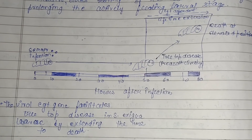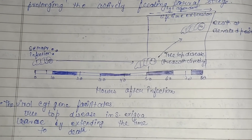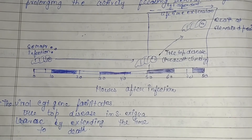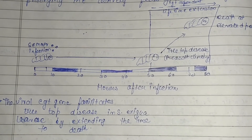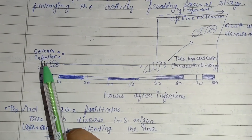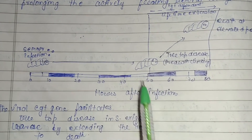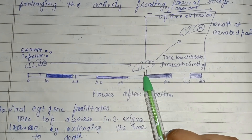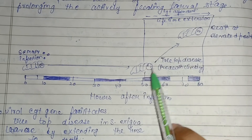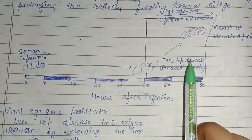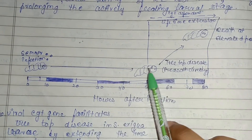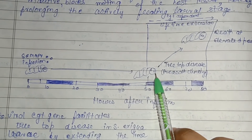A diagram shows the viral egt gene facilitating disease in Spodoptera exigua by extending the time to death. After infection, the egt gene is inserted and causes death earlier than natural death would occur — before the pre-death climbing phase — so infection at an elevated position is prevented.